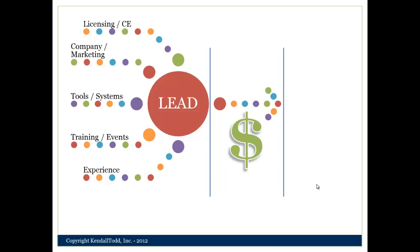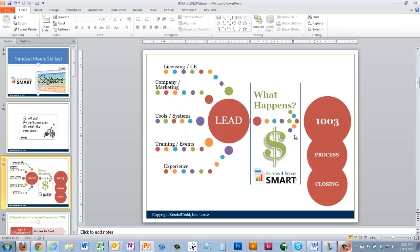If you're a first-time listener, I like to share this one slide: if you take all the money you've invested in licensing, marketing, company tools, systems, training, events, experience — all that was done to get you to a position to be able to talk to a client, which we think of as a lead — the big question should be: what happens here? How are you going to make sure that when that client comes in, you do everything you can to make the sale?